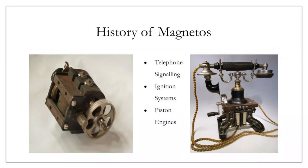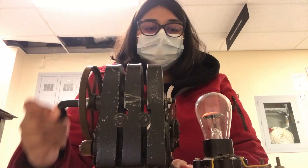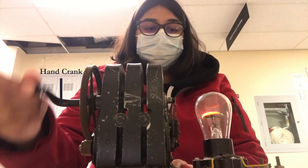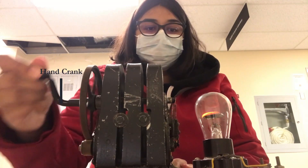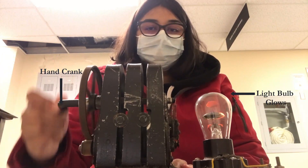The magnetos were also used in ignition systems and piston engines. Nowadays, magnetos are also present in our car engines. Now let's see how this apparatus works. As you may see, when I rotate the hand crank of the magneto generator, the light bulb starts to glow.